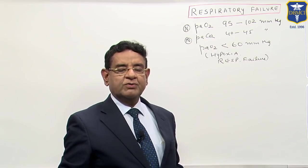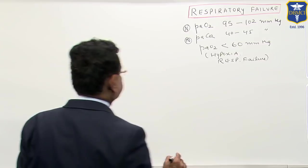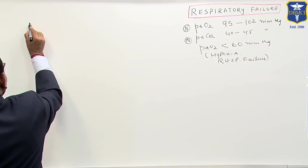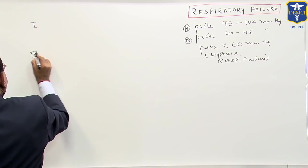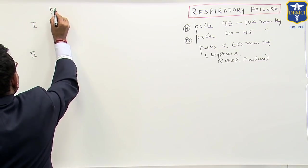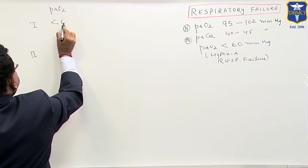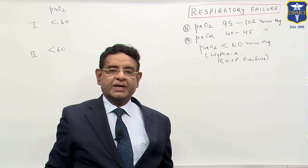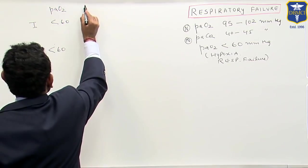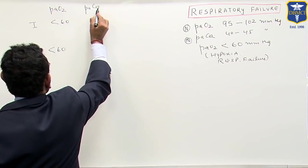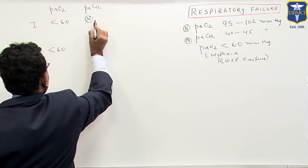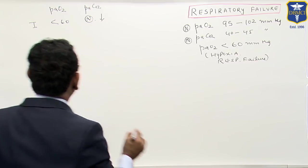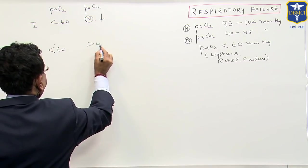Now, what are the types of respiratory failure? We have type 1 failure, we have type 2 failure. PaO2 less than 60 mm of mercury, PaCO2 normal or less than 40, but in type 2, it is more than 45.